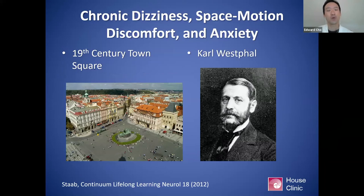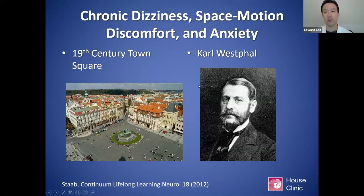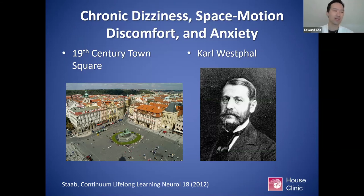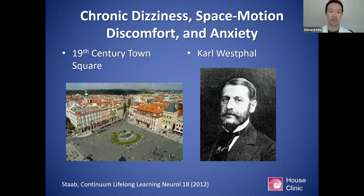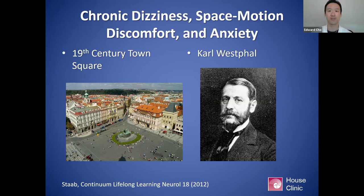This concept of chronic dizziness, space motion discomfort, and anxiety is not new at all. As far back as the 1800s, German neurologist Karl Westphal found that some patients had problems in the 19th century town square — where all commerce occurred, all markets and shops and social interactions. He found individuals who had significant difficulty in these sorts of environments. A lot of his criteria now match the characteristics of people with agoraphobia, but he described some of the earliest evidence of chronic dizziness associated with space motion discomfort.